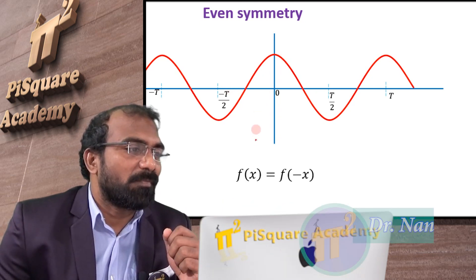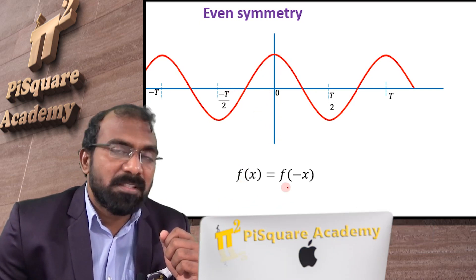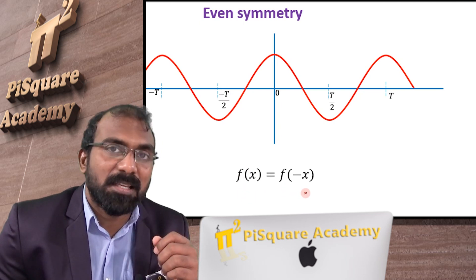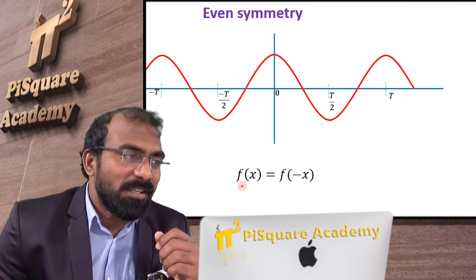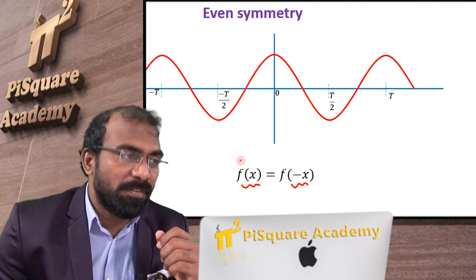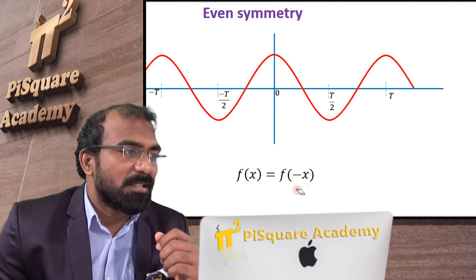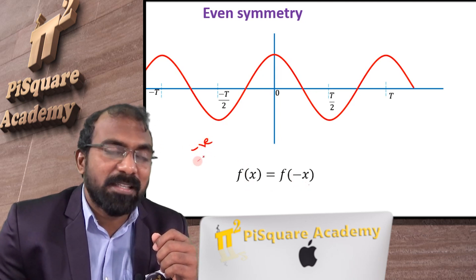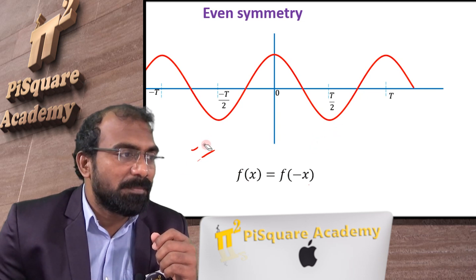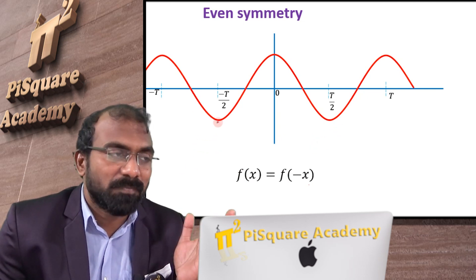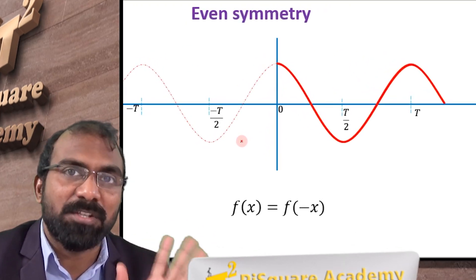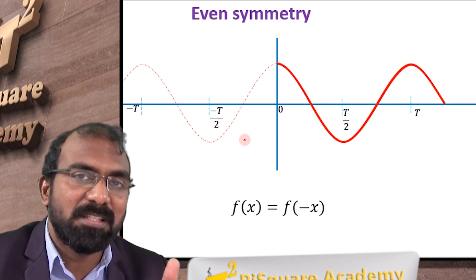The first one is even symmetry. By the definition of even symmetry, we have f of x equals to f of minus x. That is, the signal on the positive x side and the negative x side are the same. So this is the negative x side signal and this is the positive x side signal. If I bring this negative x signal to the positive x side, those two will overlap each other. That is what even symmetry.